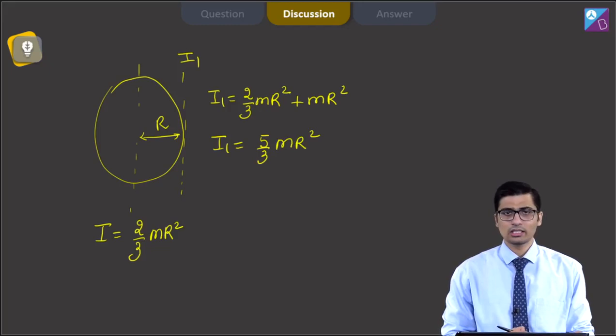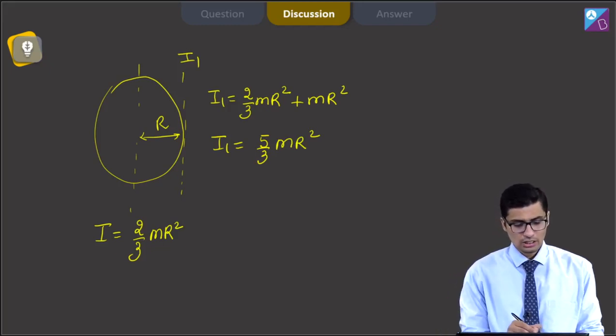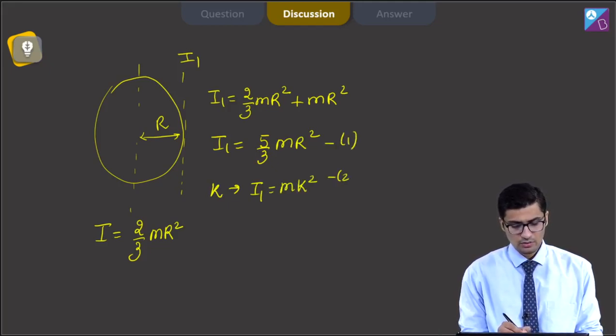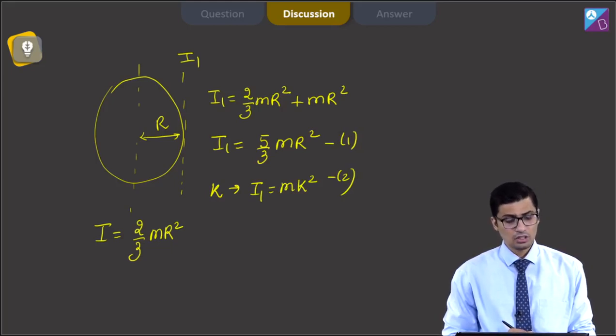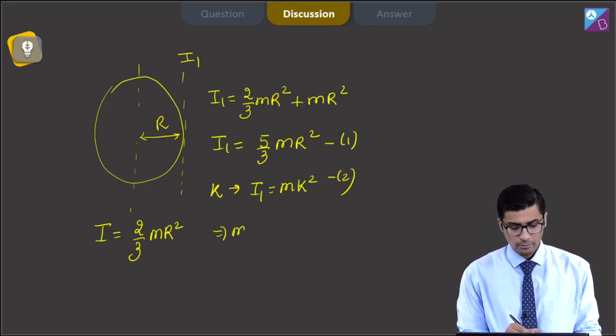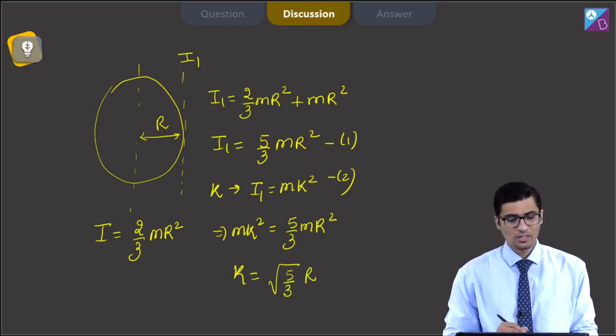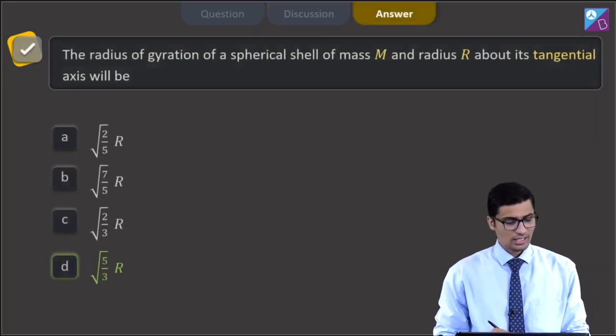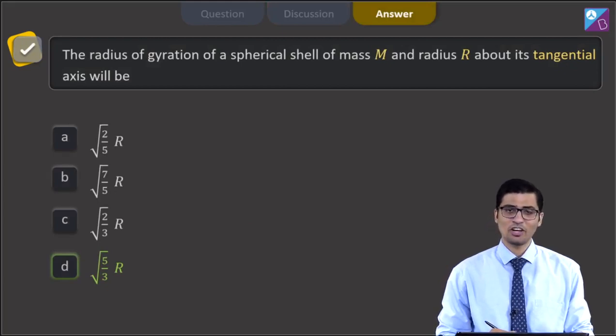Now we must also know that if the radius of gyration is equal to K, then the moment of inertia can also be written as MK square. If we compare the equations, we can write down that MK square is equal to 5 by 3 MR square, giving the value of K to be equal to root 5 by 3 R. And hence for this question, the correct answer is D, that is root 5 by 3 R.